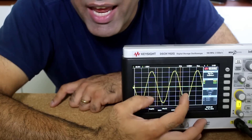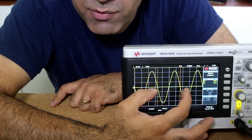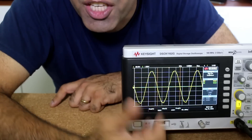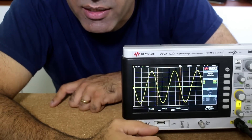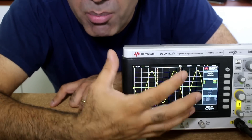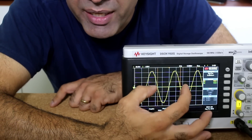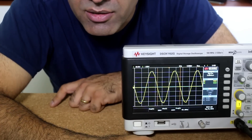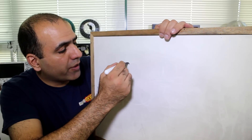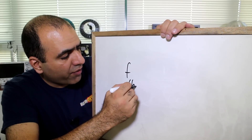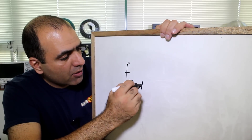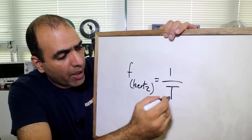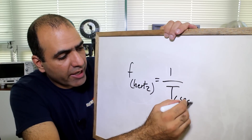The period of an AC signal is the time it takes for one full pattern to finish, which in this case is 16.7 milliseconds. And the frequency is the number of times this pattern repeats in one second, which is 60 hertz in this case. Naturally, frequency is shown with a lowercase f with a unit of hertz, equal to one over the period, which is shown with a capital T with a unit of seconds.